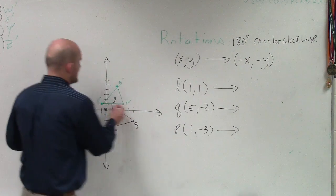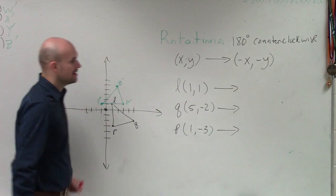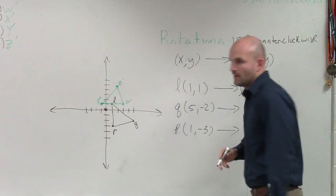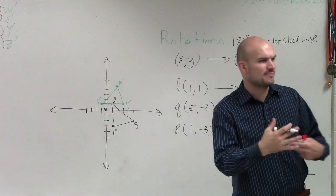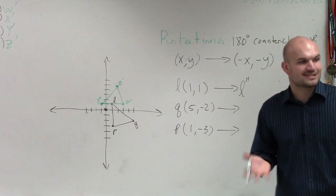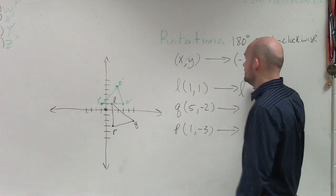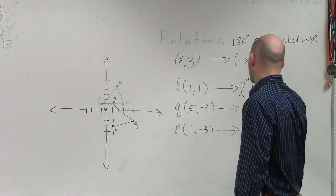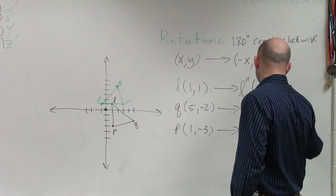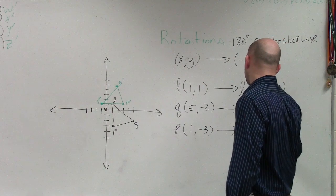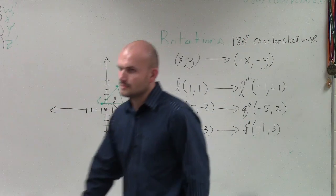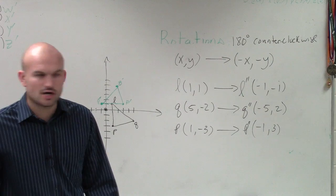So we already did L prime, Q prime, and P prime, so now I'm going to call this L double prime, just because I'm transforming it twice. So L is now going to be negative 1, negative 1. Q double prime is going to be negative 5 comma 2, and P double prime is now going to be negative 1, 3. Yeah, you just negate them, so it's 180 degrees.